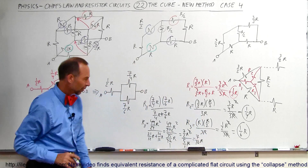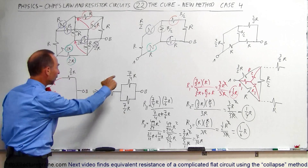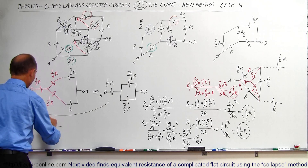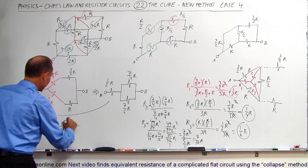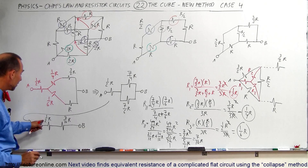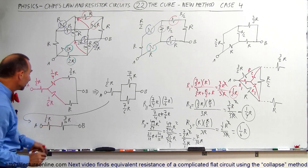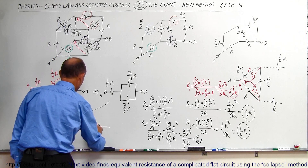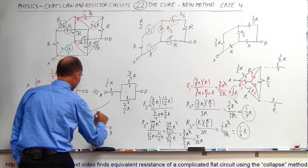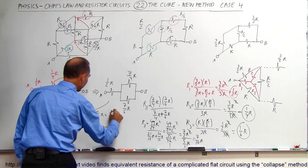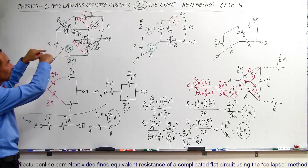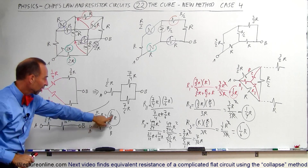So we end up with a circuit from point A: the first resistor is 1/2 R, and the second equivalent resistance is 7/10 R, leading to point B. Combining these two in series: 1/2 R = 5/10 R, so 5/10 + 7/10 = 12/10 R = 6/5 R. The entire cube circuit — with 2R resistors on the bottom, 1R resistors on the vertical legs, and the top — collapses down to a single equivalent resistance of 6/5 R.